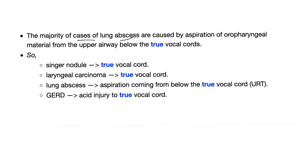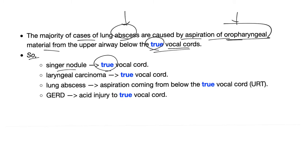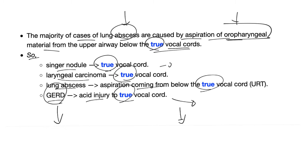Some pearls: the majority of cases of lung abscess are caused by aspiration of oropharyngeal material from below the true vocal cords. Singer's nodule, laryngeal carcinoma, and laryngeal papilloma all occur on the true vocal cords. GERD can cause acid injury to the true vocal cords, leading to dysphonia or hoarseness of voice. Everything important happens at the true vocal cords — the false vocal cord, nobody cares.